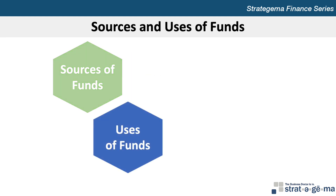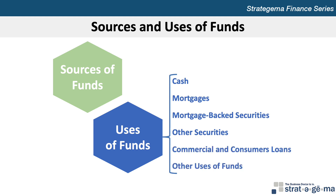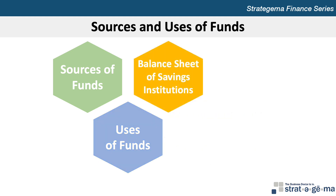SIs typically use their funds for a number of purposes, including maintaining cash primarily to accommodate withdrawal requests of depositors. They also provide mortgages for residential and commercial properties, purchase mortgage-backed securities, and invest in other securities such as treasury bonds and corporate bonds. SIs offer consumer and commercial loans and provide temporary financing to other institutions through repurchase agreements. The sources of funds represent liabilities or equity, whereas the uses of funds represent assets.